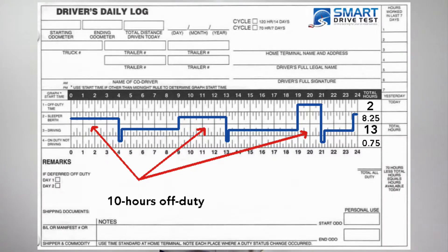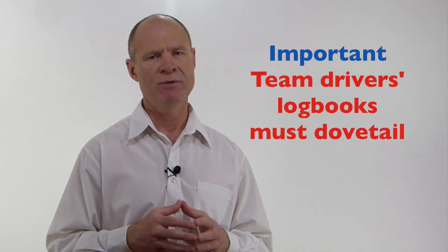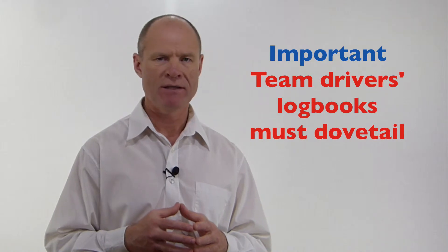Those are the rules for single drivers if you want to split up your off-duty time. For team drivers, two blocks of four hours and one other break of two hours. So it's four hours off, the other driver drives, you drive, the other driver takes off four, four, drive, four, drive. So minimum four blocks for team drivers. Now, one of the things that's really important for team drivers, your log books have to dovetail. What I mean by dovetail is that they have to fit together like this.